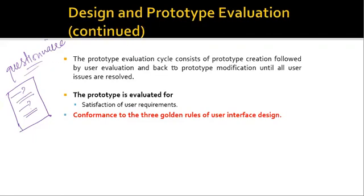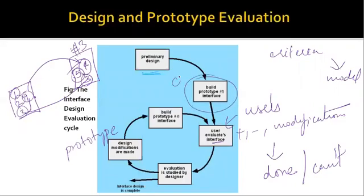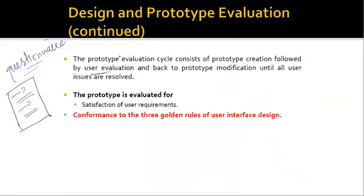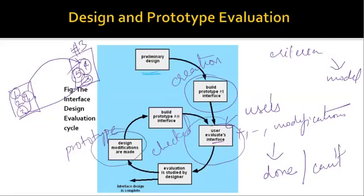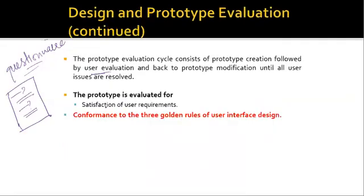The prototype evaluation cycle consists of prototype creation followed by user evaluation — what is created is checked by the user who will use the system — and then back to prototype modification until all issues are resolved. The prototype is evaluated for satisfaction of user requirements, whether all requested features are present, and whether the user is satisfied with the aesthetics such as colors. It is also checked for conformance to the three golden rules of user interface design.